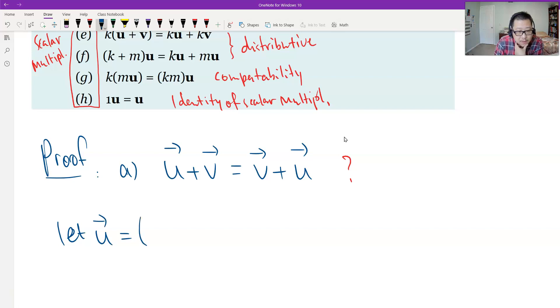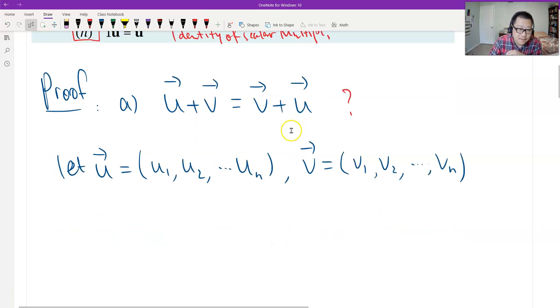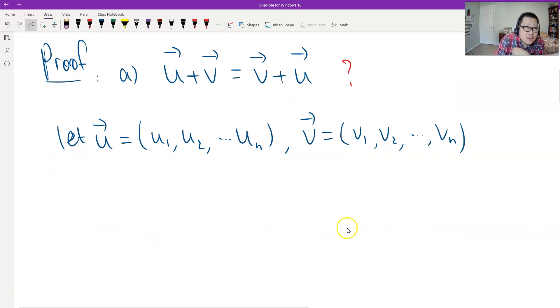Let's set up. Let u be the vector (u1, u2, ..., un). This is the n-space. And v is (v1, v2, ..., vn). Then we can find, we work from the left to the right.